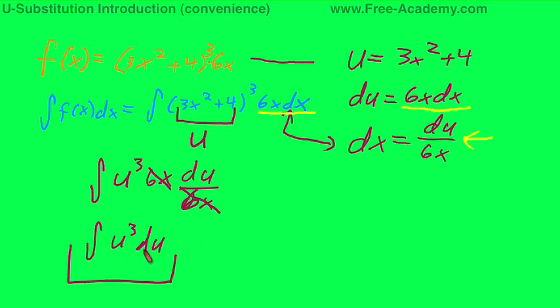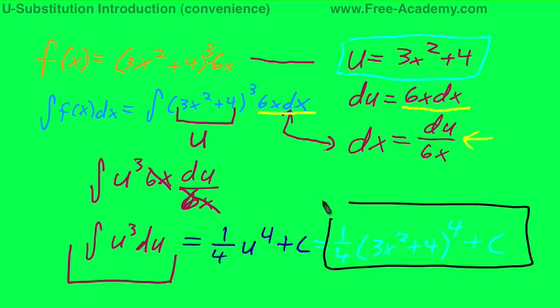Going back to our integral, the integral of u to the third du, we already know that that's one-fourth u to the fourth plus c. Now, we're going to substitute our u back into it. And we're going to get one-fourth, 3x squared plus 4, to the fourth power plus c. Now, if you ask me, that is our integral. That's the answer to the integral that we started out with.